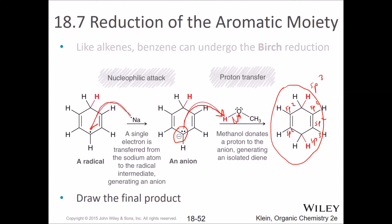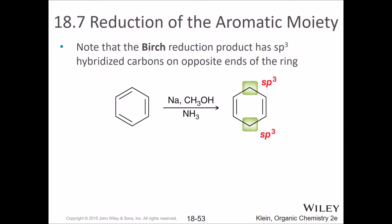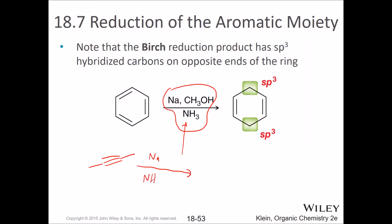These are pretty extreme conditions — it's called the Birch reduction, and it's a reaction and mechanism you need to memorize. Note that the Birch reduction product has sp3 hybridized carbons on opposite ends of the ring. The reaction is done in methanol and ammonia. What do sodium and ammonia give you? You've seen this reaction before in chapter 8 or 9.